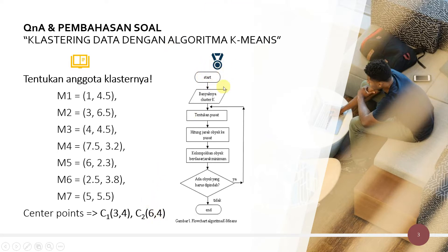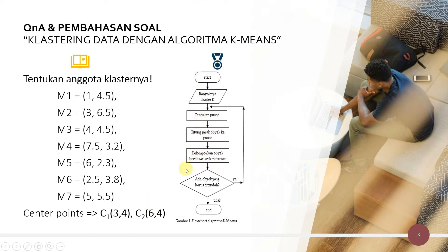Untuk algoritma K-Means, langkah pertama adalah kita menentukan banyaknya cluster — kita ingin mengelompokkan menjadi berapa. Contohnya di sini, dari ketujuh titik ini, kita akan kelompokkan menjadi dua, yaitu C1 dan C2. Titik pusat cluster pertama dan kedua sudah diketahui. Kemudian hitung jarak objek ke pusat, sehingga kita hitung satu per satu: jarak M1 dengan C1, dan M1 dengan C2.